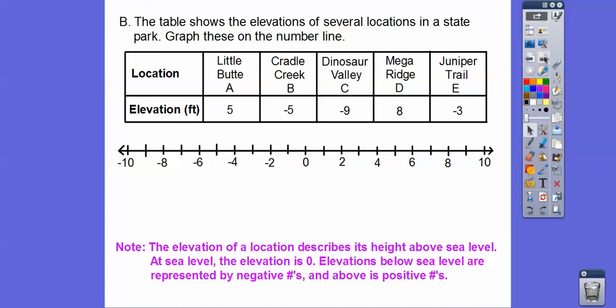We've got a table that shows the elevations of several locations in a state park, and we're going to graph these on the number line. The elevation of a location describes its height above sea level. When you're at sea level — down at the ocean — the elevation is zero. Elevations below sea level are represented with negative numbers, and above sea level with positive numbers. Most people live in areas above sea level. For example, I live in an area where the elevation is about 57 feet above sea level. Let's plug in five and call it point A for Little Butte.